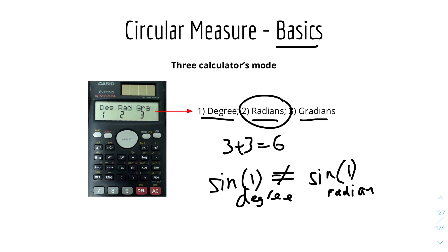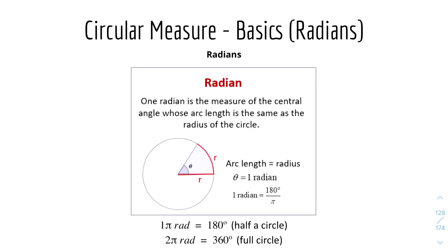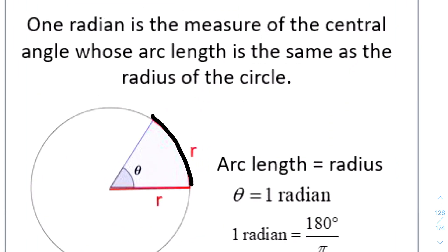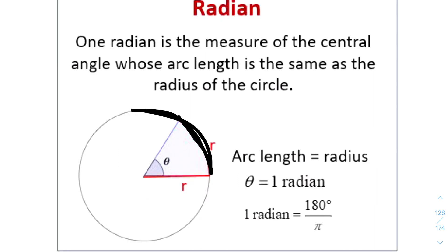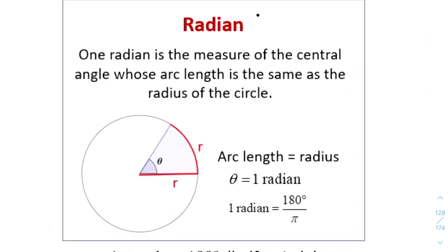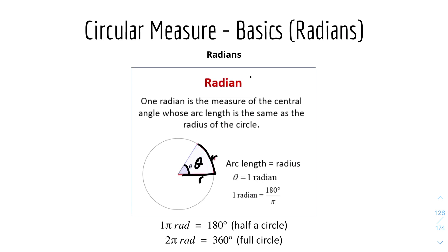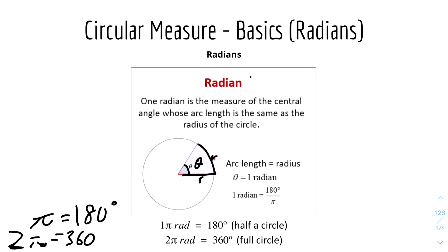Now we have some basics for radians. One radian is the measure of the central angle whose arc length is the same as the radius of a circle. The arc length is any part along the circumference. When the arc length equals the radius, that angle is 1 radian. Also, π radians equals 180°, 2π equals 360°, and π/2 equals 90°.